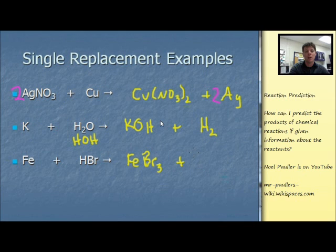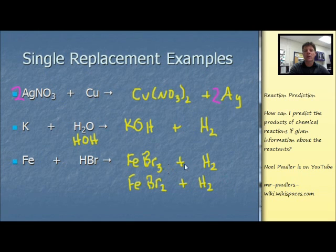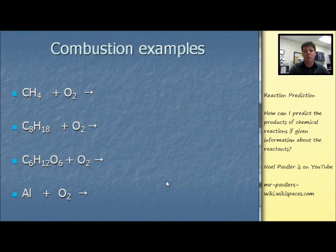And I've left this one unbalanced. Our third example: we have iron plus HBr. That's hydrobromic acid or hydrogen bromide, called hydrobromic acid when dissolved in water. Now, for my students, I don't care that you need to know which of those products will be formed, either FeBr2 or FeBr3.